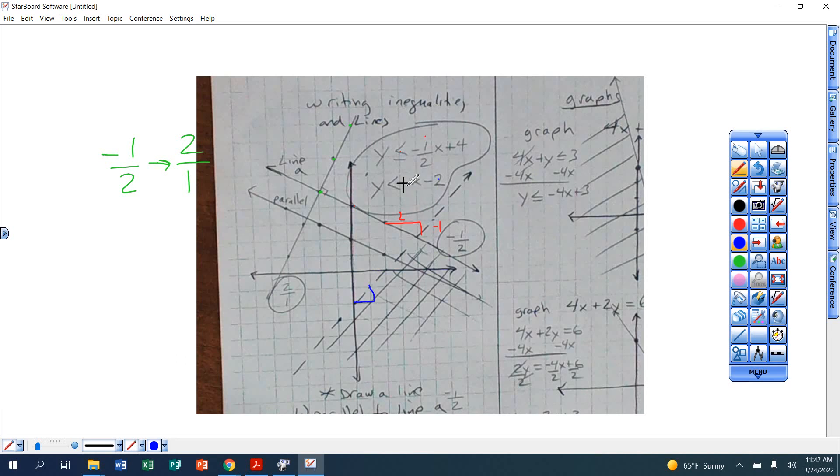If I want a line parallel to line a, which is this line right here, a parallel line has the same slope of that one. So any line with that same slope but a different y-intercept is parallel. So here's one starting at two, different y-intercept, but still going right two down one. So there's me drawing a parallel line, same slope, different y-intercept.